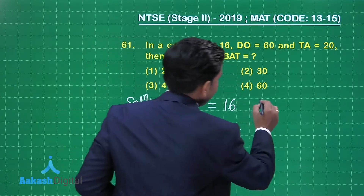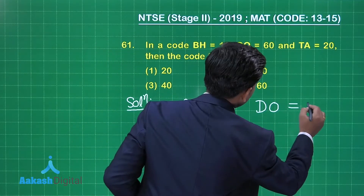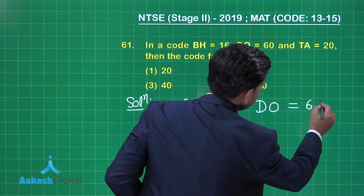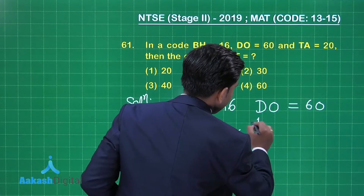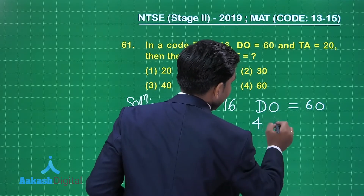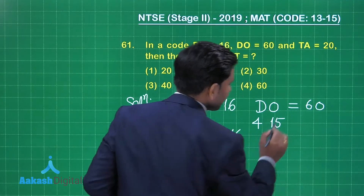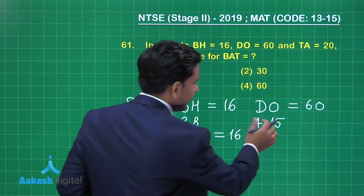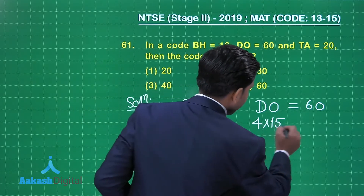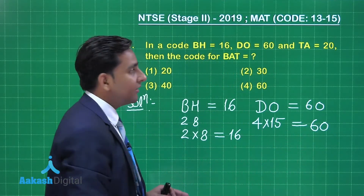Same for DO, which is equal to 60. The position of letter D in the English alphabet is 4 and O is at the 15th position. Their product is equal to 60. So this is the pattern.